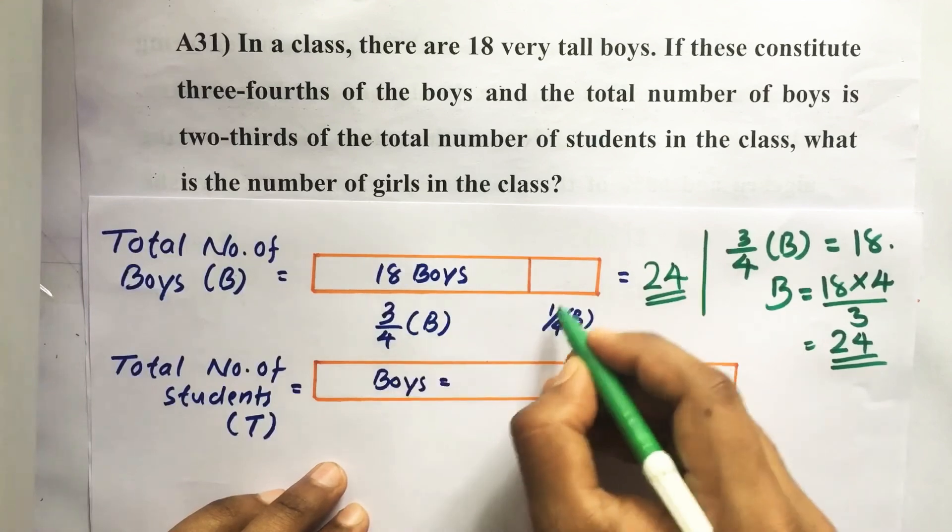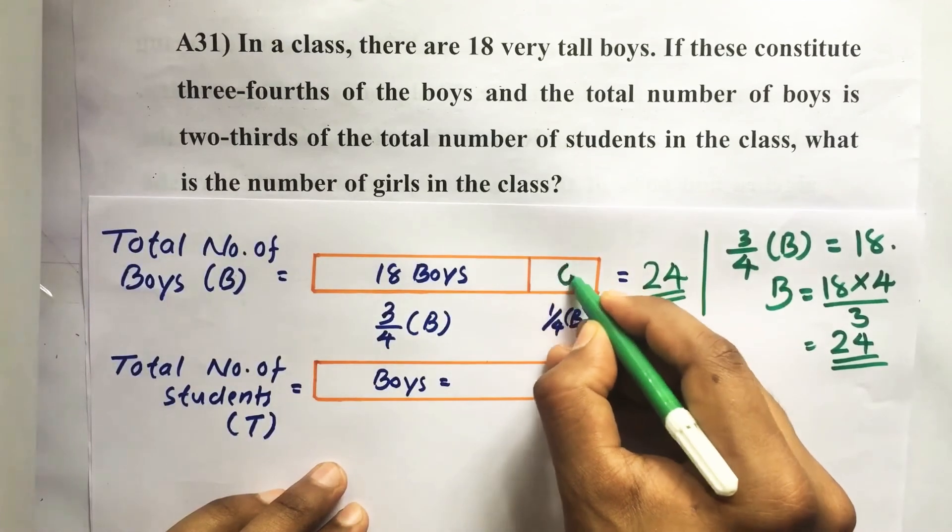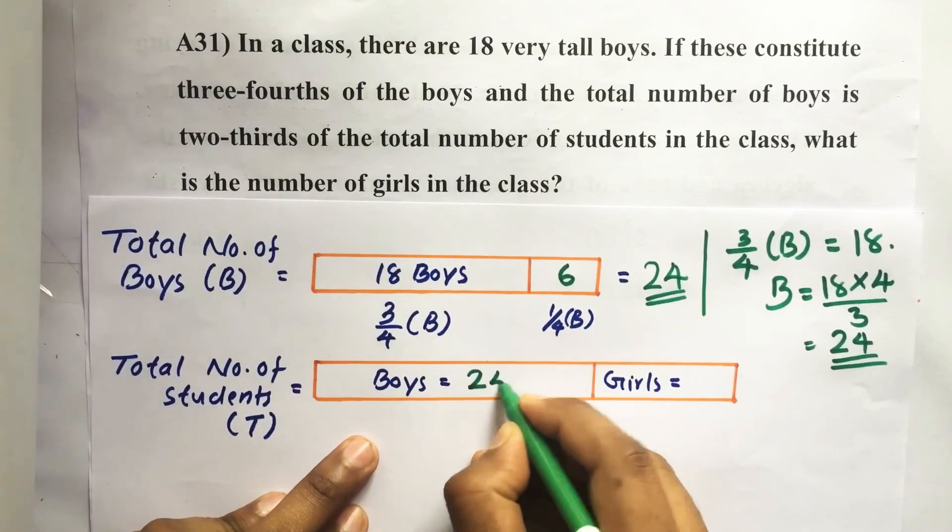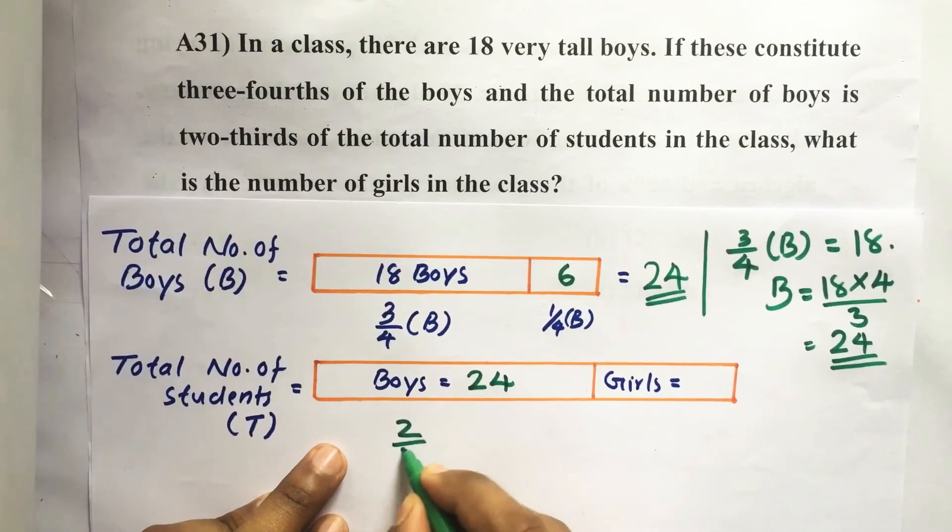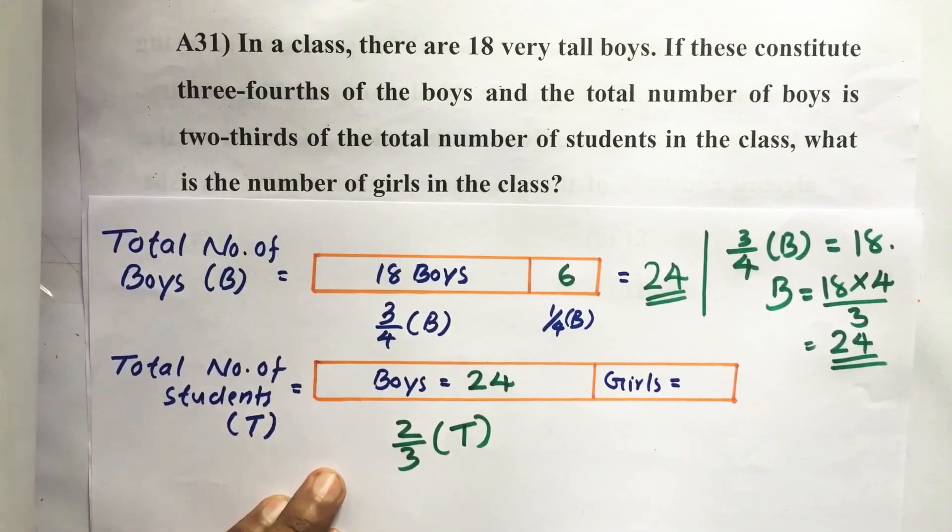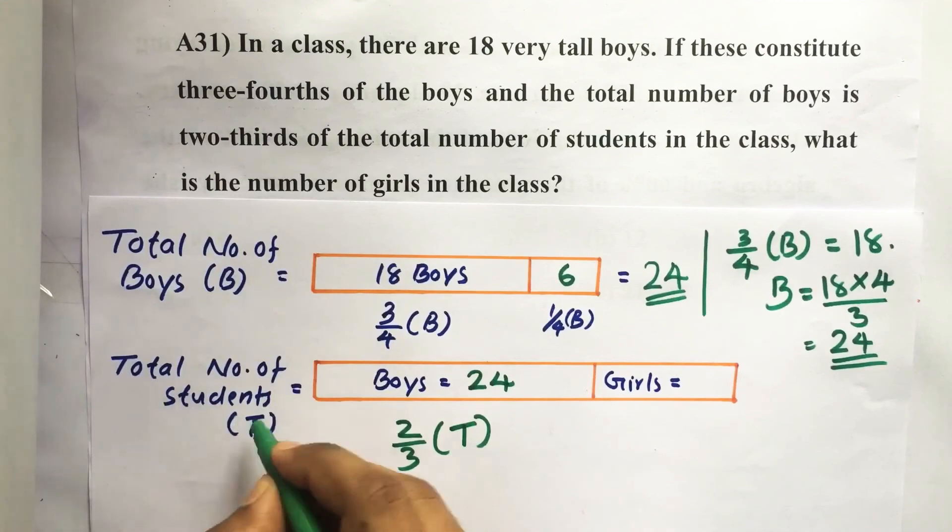So here, it is given that this 24 boys equal to the two-thirds of total number of students in that class. Then what is the number of girls in that class—that is what we have to find here. So two-thirds of T equal to 24. T is the total number of students.